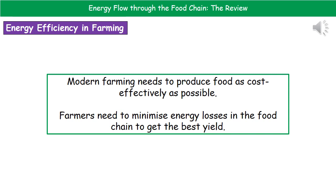If we consider how this relates to us as humans, the most likely place we're going to be using this information is in our farming methods. We can use this knowledge to make our farming more energy efficient. With our ever-increasing population we need to produce food as cost effectively as possible so it can be sold on for a reasonable price to consumers. Farmers need to minimize energy losses in the food chain to get the best yield and sell it for as little as possible.